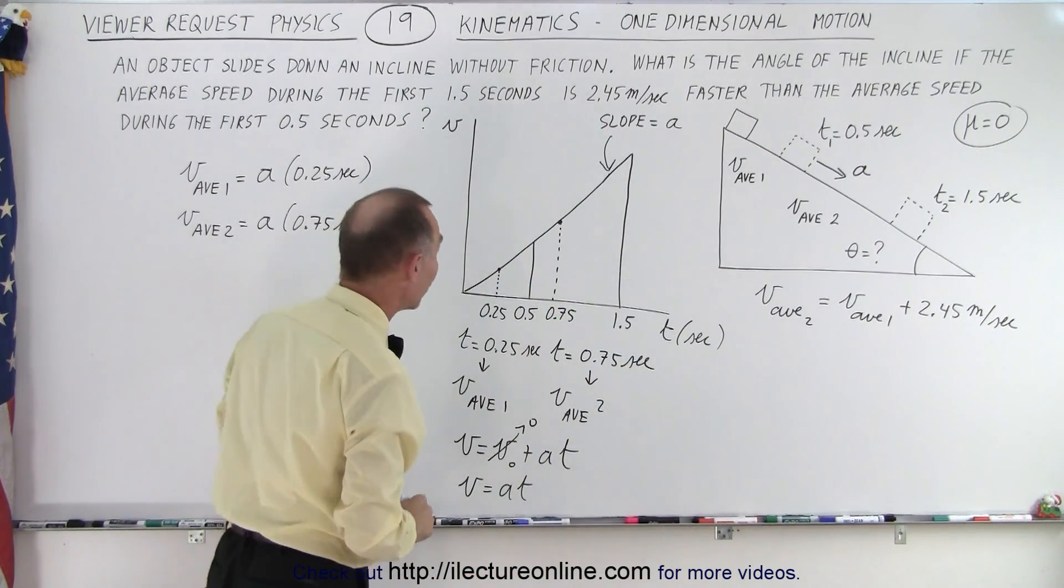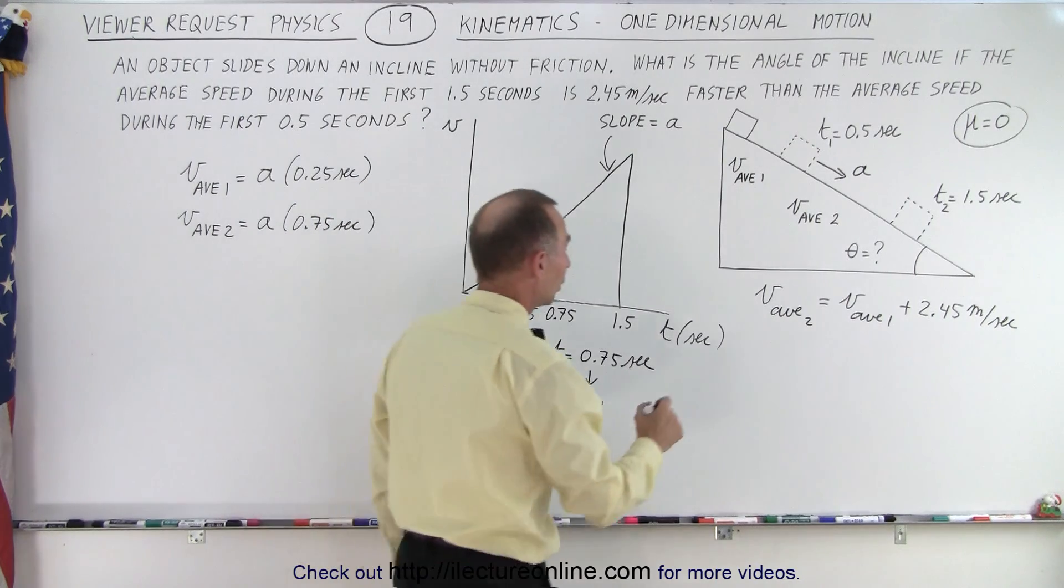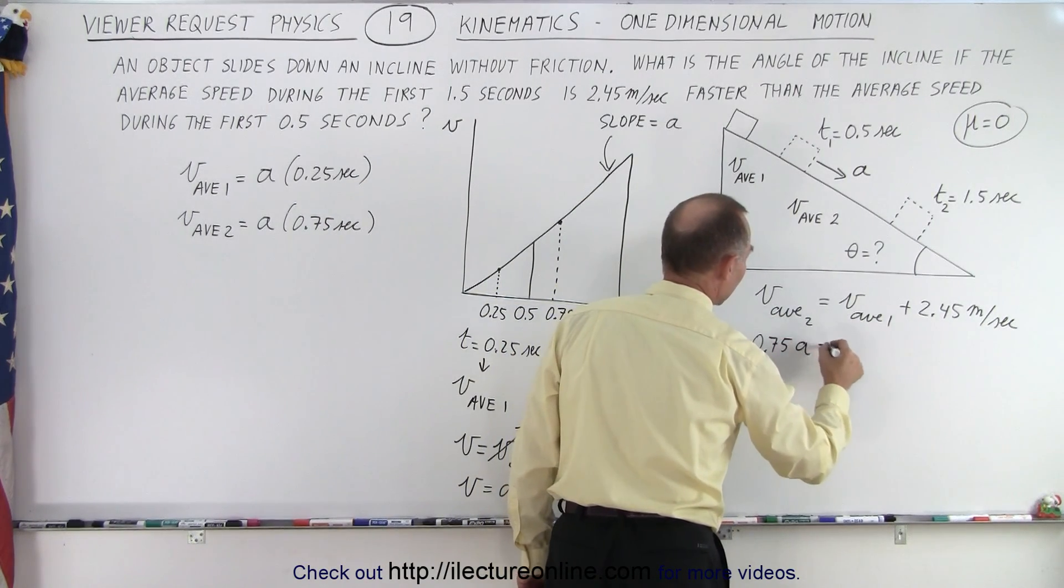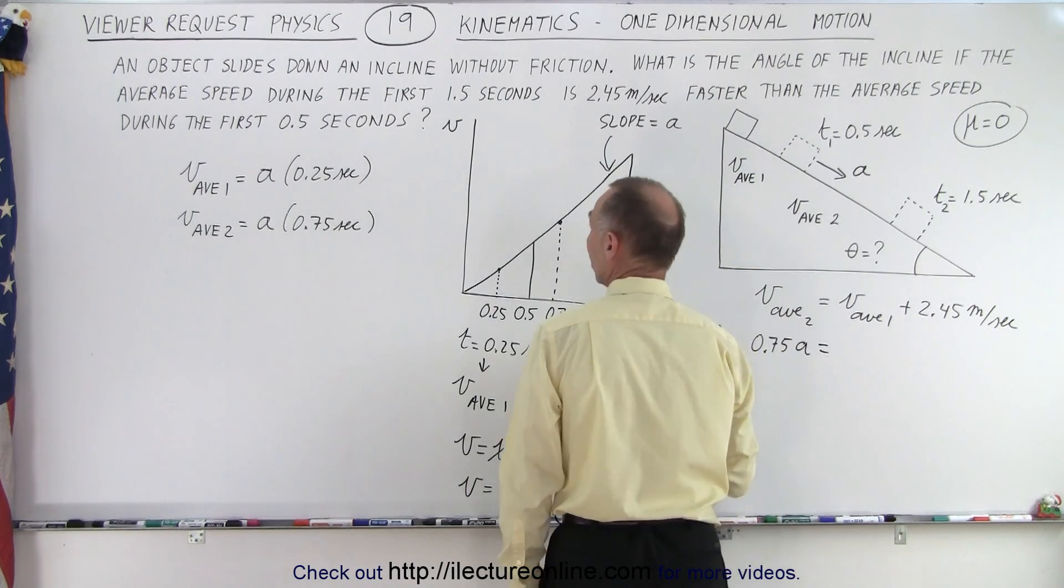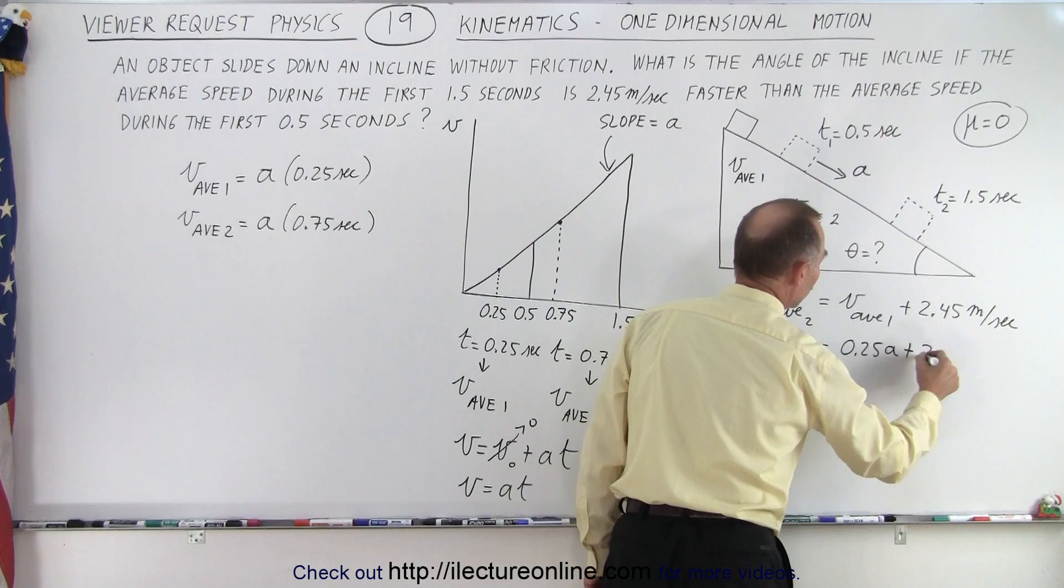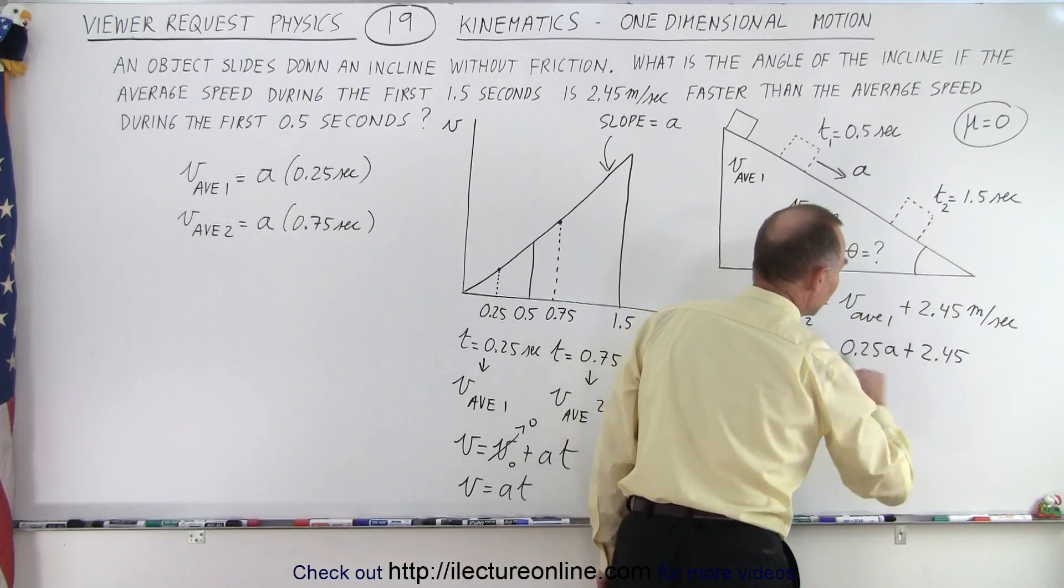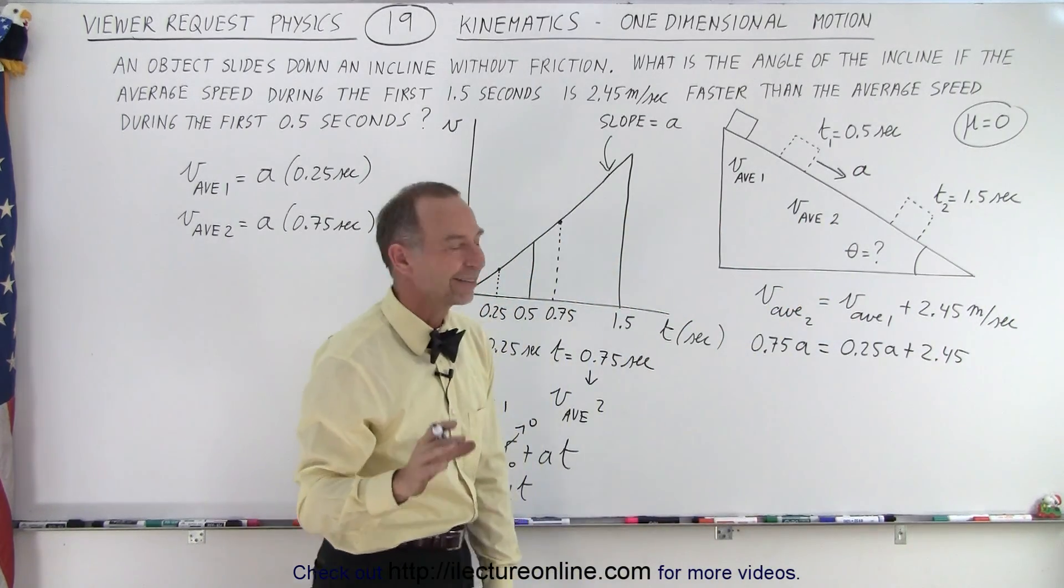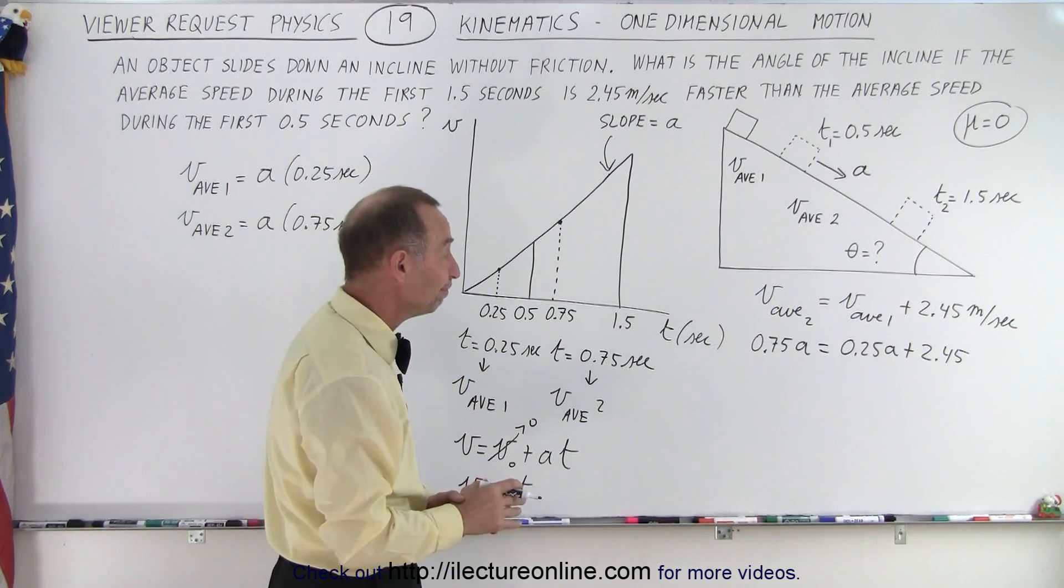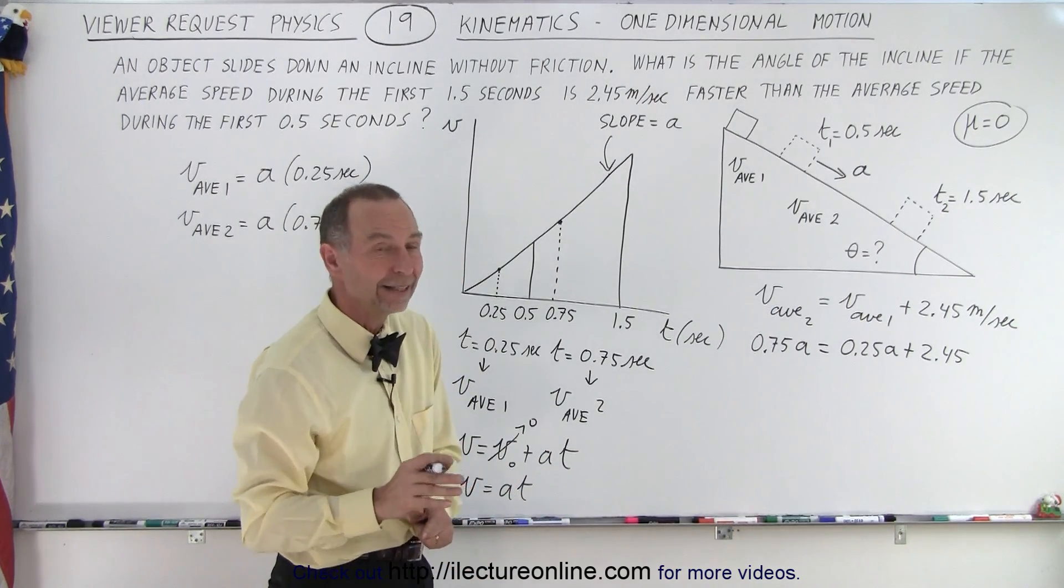Now let's plug in what those are. So V average 2 can be written as 0.75a is equal to V average 1, which is 0.25a plus 2.45. And notice at this point, we can find the acceleration of the object on the incline. Once we know the acceleration, then we can find the angle.